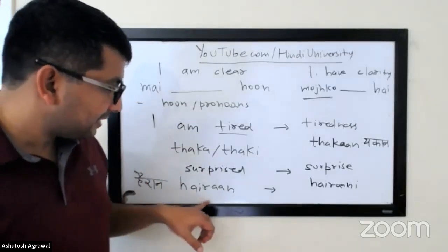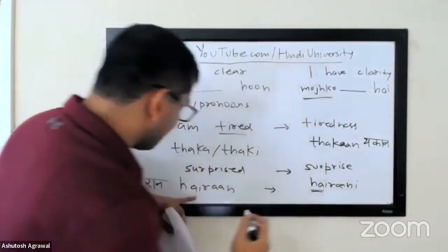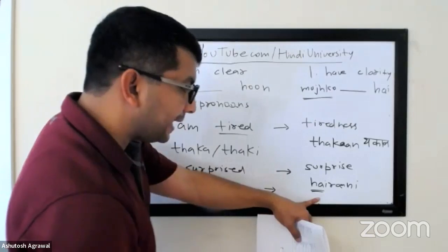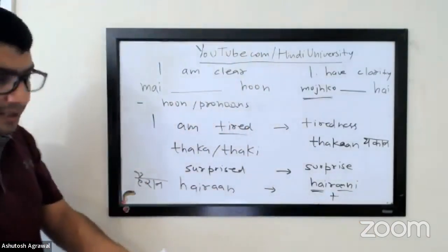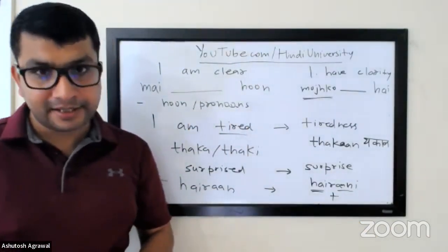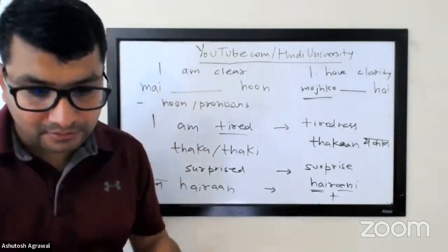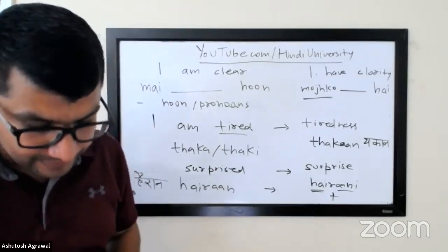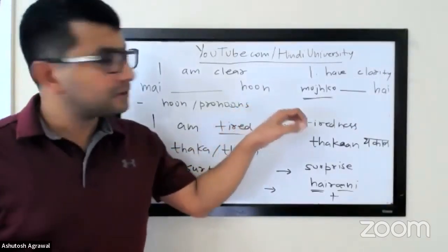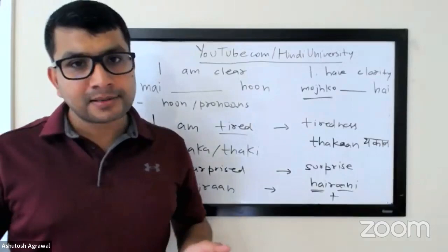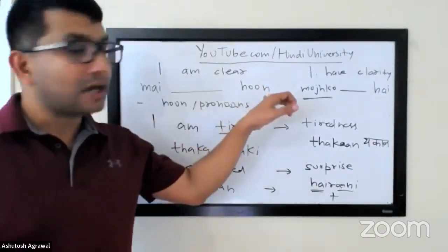So to confirm: 'main heran hoon' versus 'mujhe herani hai.' 'Herani' covers surprise, puzzlement, perplexity — anything in that range. You can also use these expressions in other tenses. For the past: 'main heran tha' — I was surprised. For the future: 'mujhe herani hogi' — I will be perplexed. Similarly with 'bimar': 'woh bimar tha' — he was sick — or 'usse bahut bimariyan thi' — he had many illnesses, using the plural. Try using 'tha,' 'thi,' 'the' and future forms as homework.